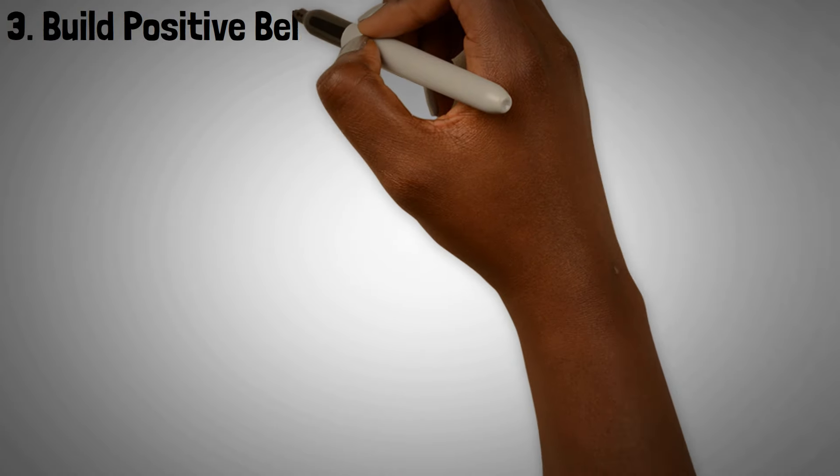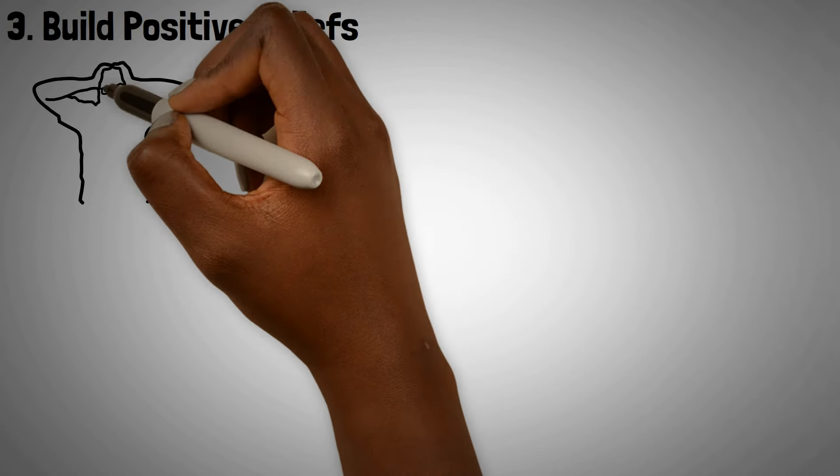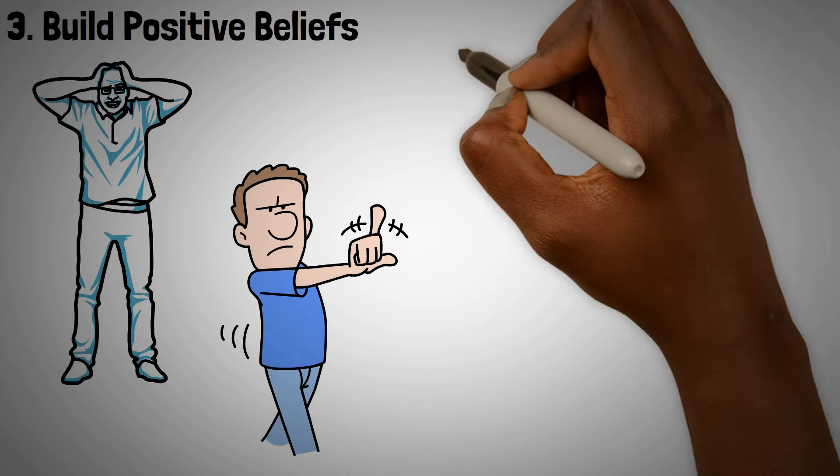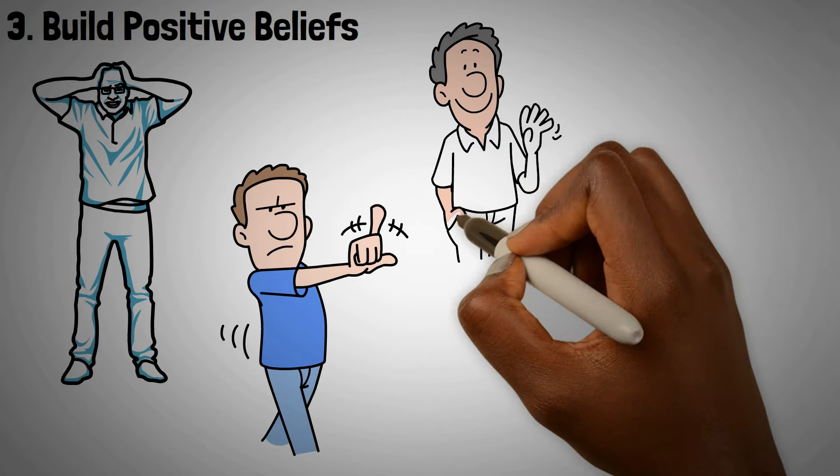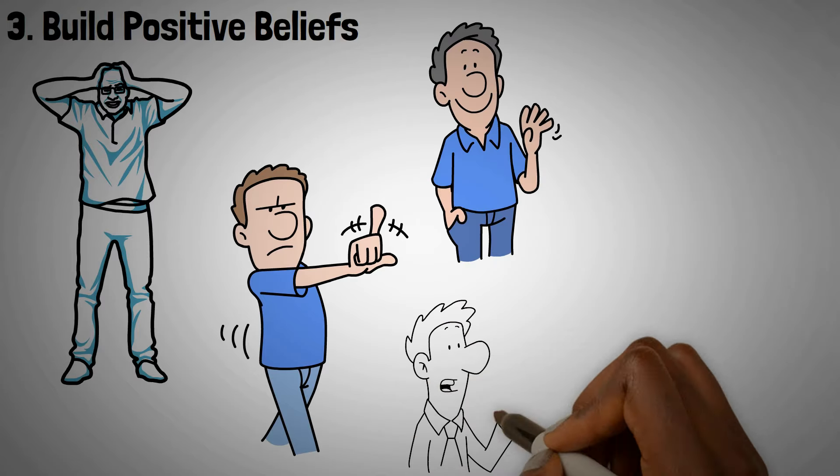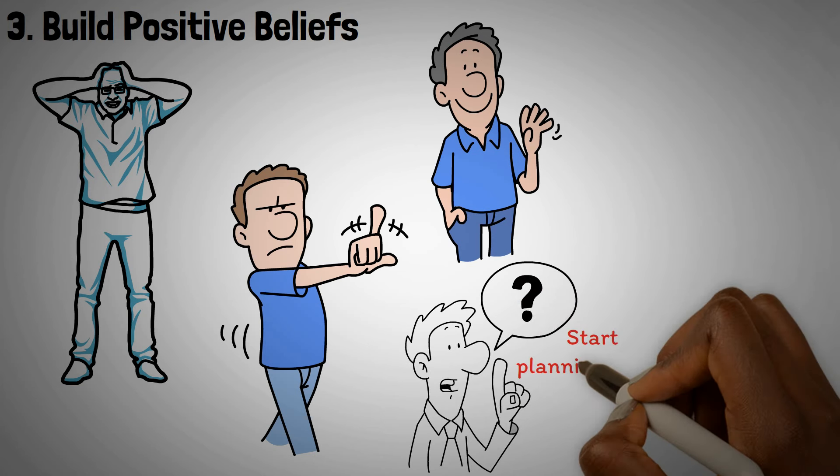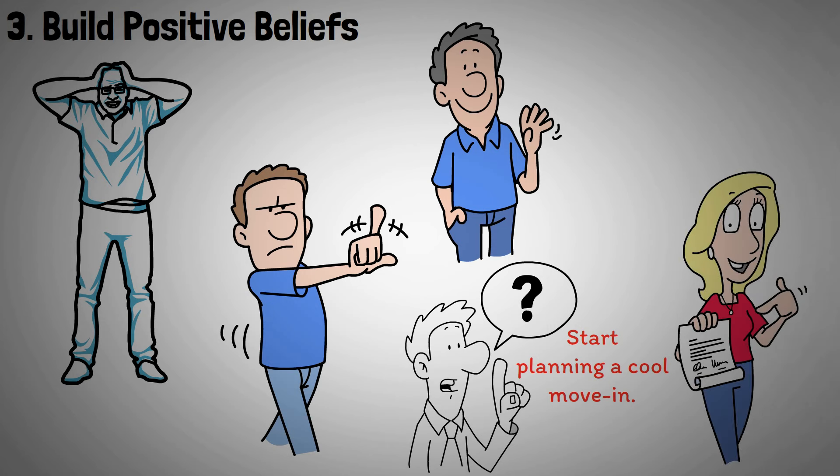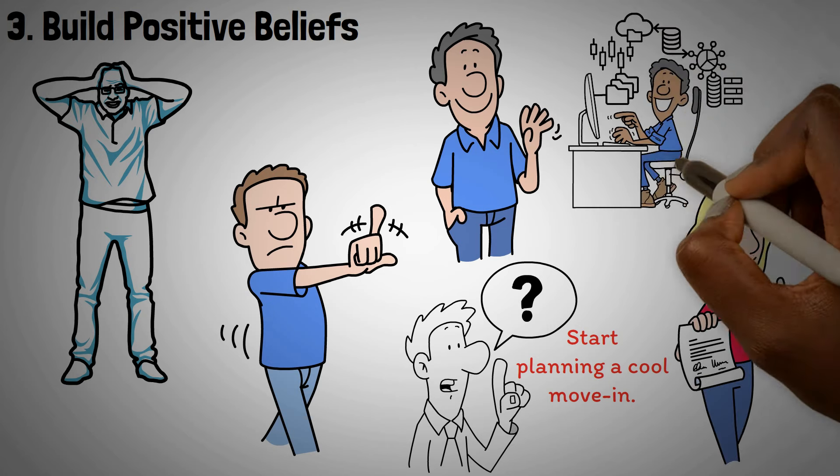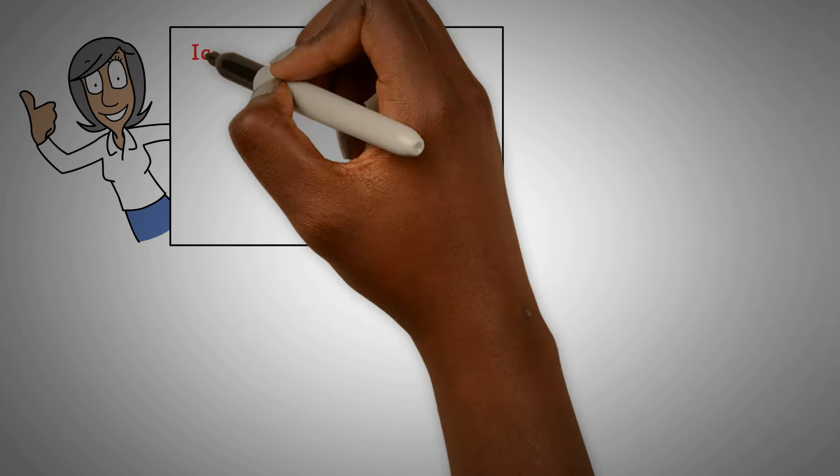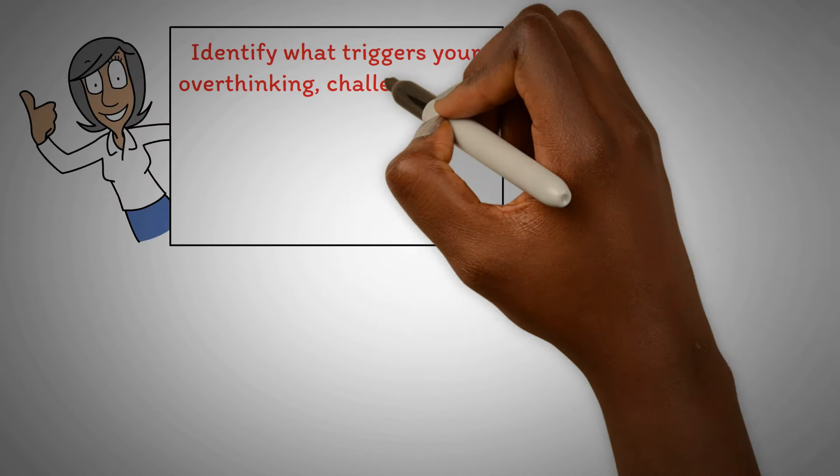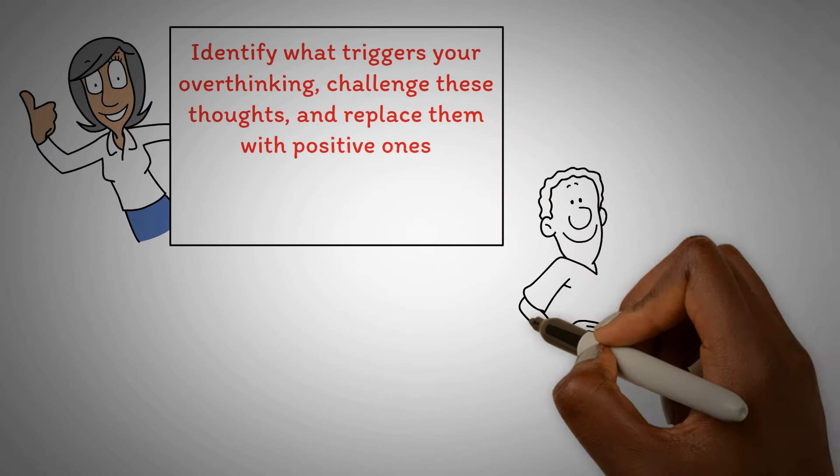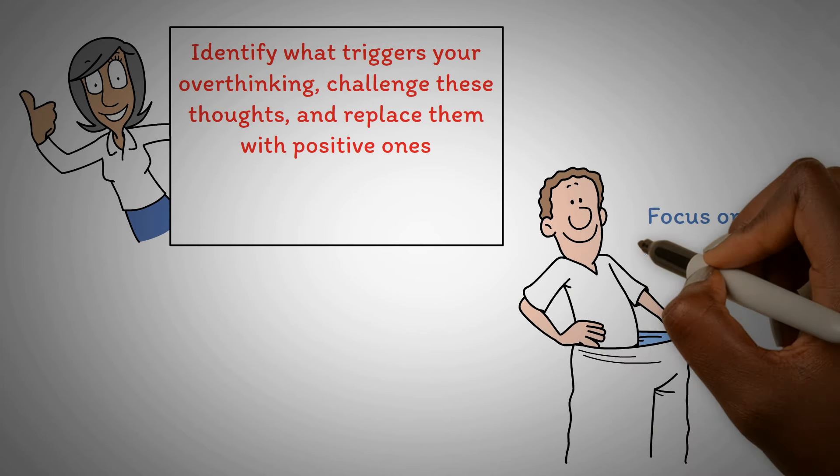3. Build positive beliefs. Replace the negative chatter in your head with positive talk. Focus on the now. Don't get hung up on the past or future. Let go of things you can't control. Signed a lease? Stop fretting over it and start planning a cool move-in. Concentrate on your needs, not wants. This helps you let go of unnecessary stress. In short, identify what triggers your overthinking, challenge these thoughts and replace them with positive ones. Live in the moment. Worry less about things out of your control and focus on what truly matters.